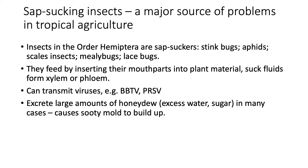The order includes true bugs like stink bugs and lacebugs, and other things that are not necessarily true bugs. All of these feed by inserting their mouthparts, which are shaped like a hypodermic needle, into the plant material, and then they suck fluids from the xylem or the phloem of the plant. In the process they can actually transmit viruses — for example, banana bunchy top virus (BBTV) or papaya ringspot virus (PRSV).